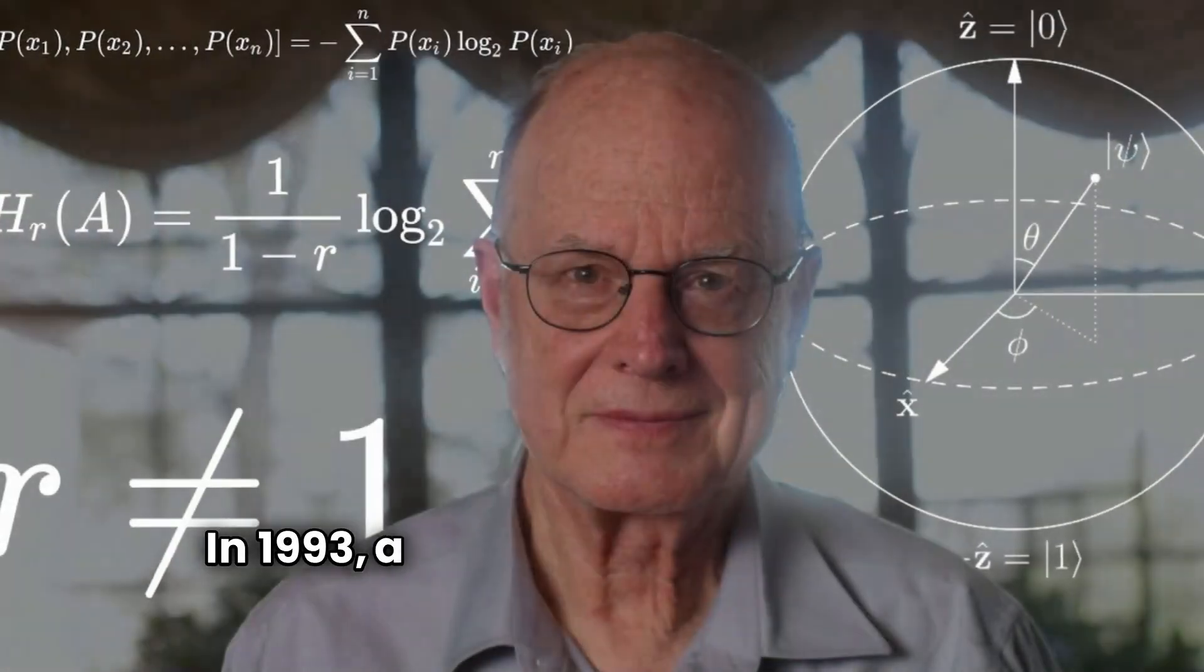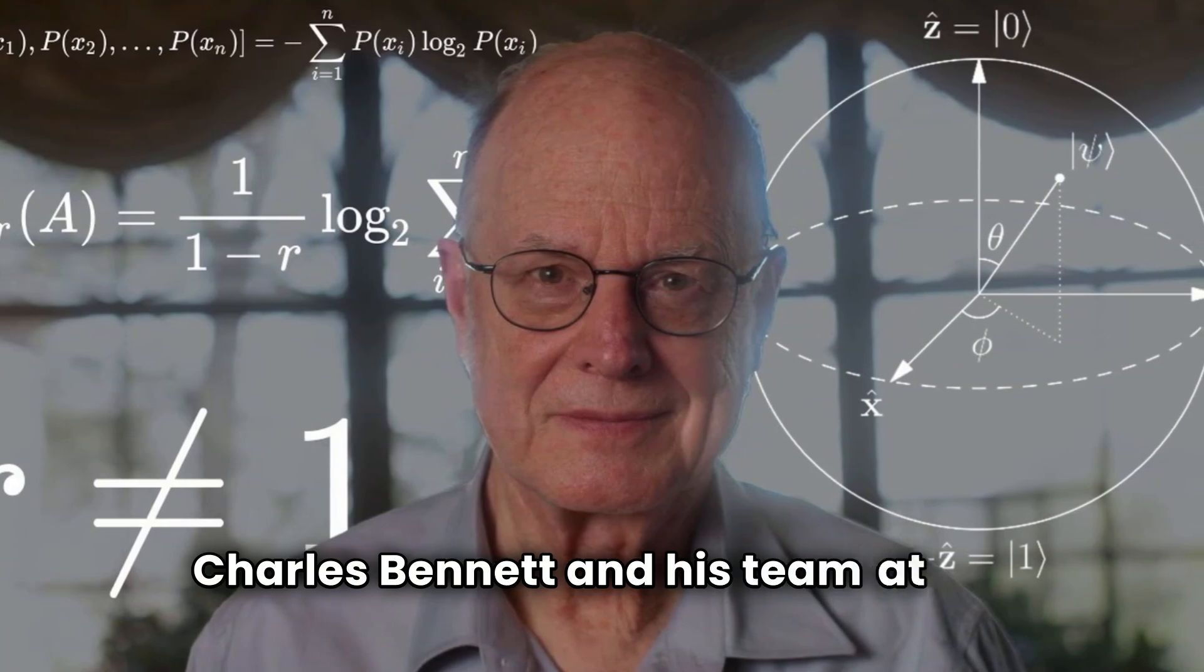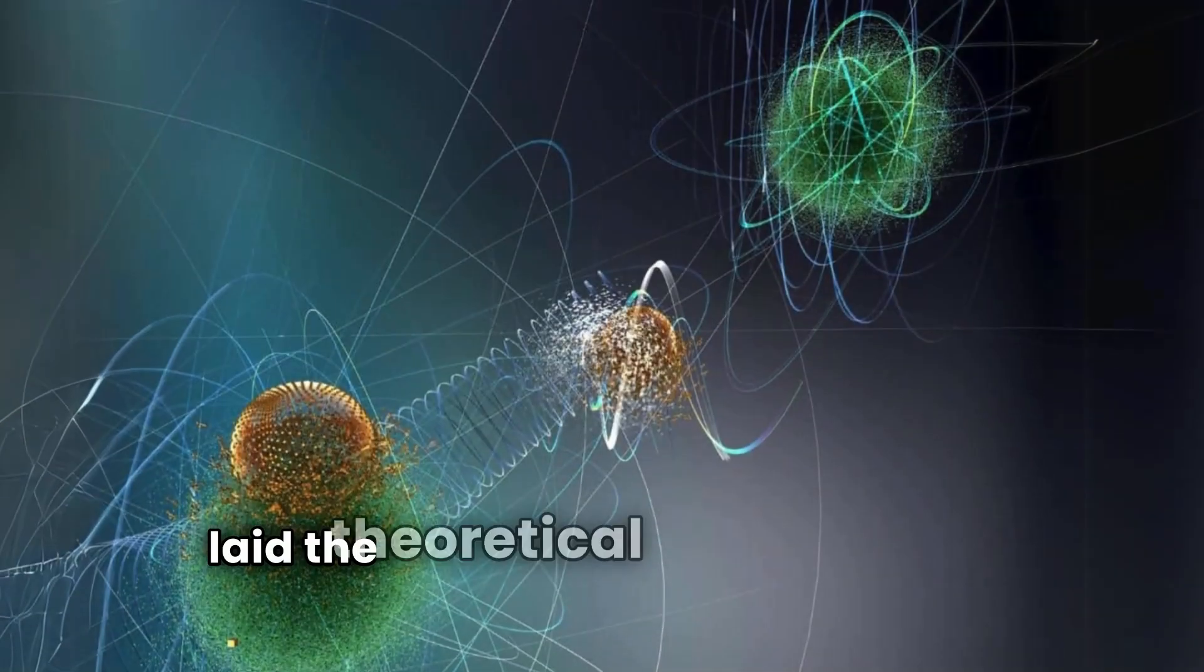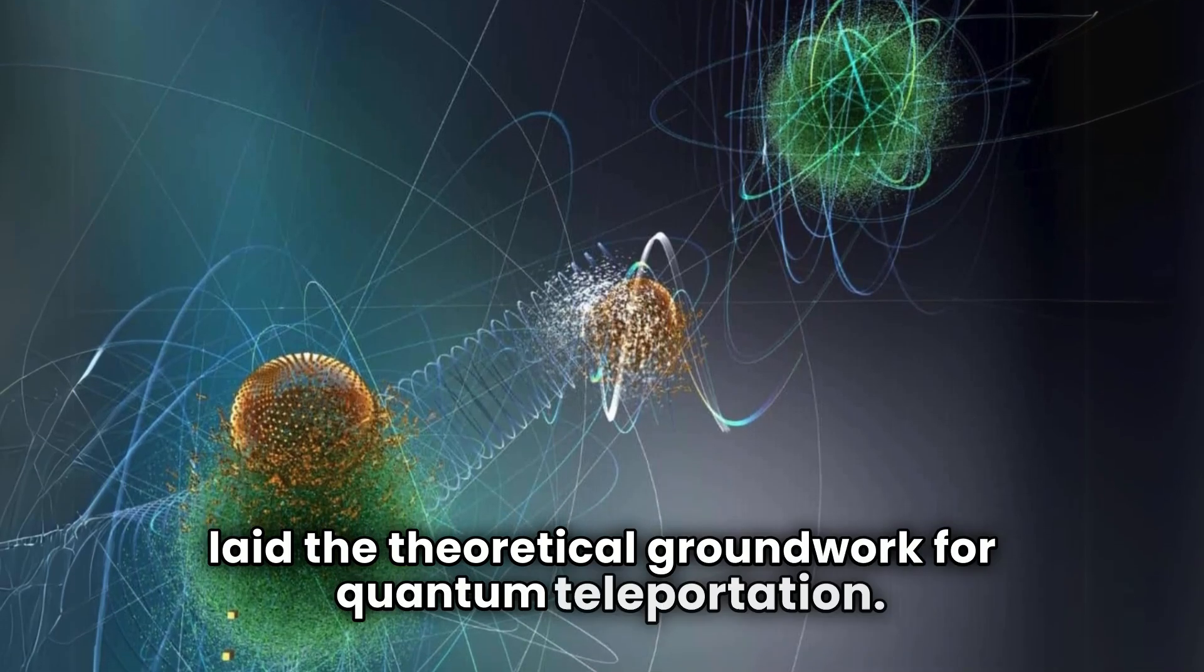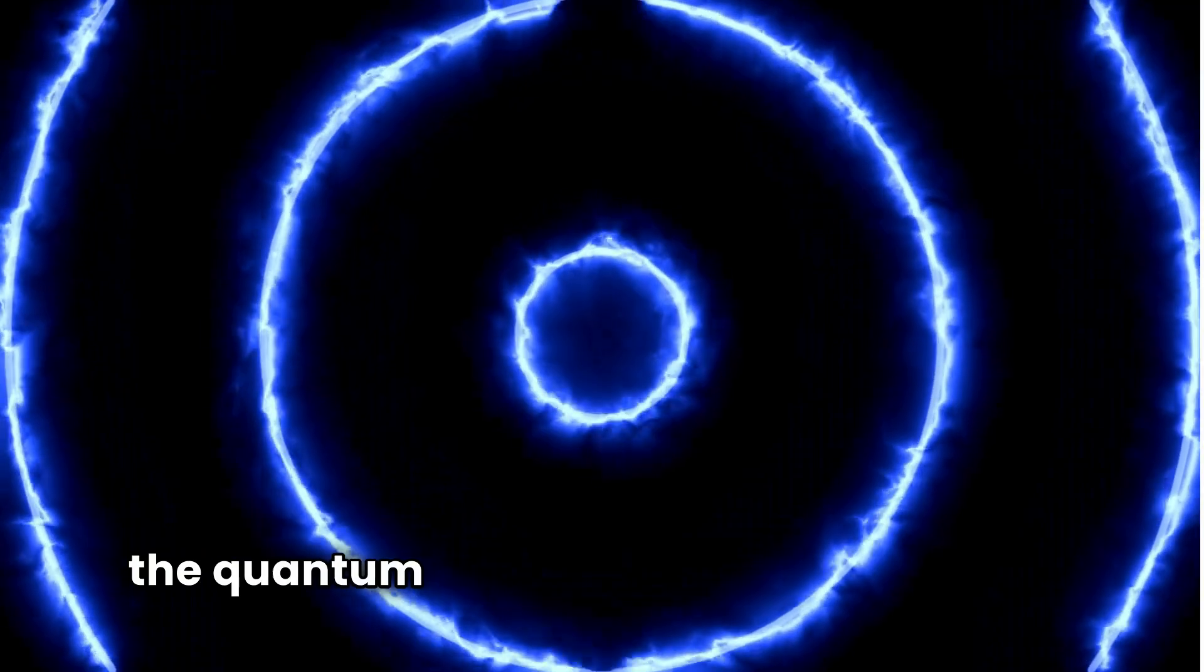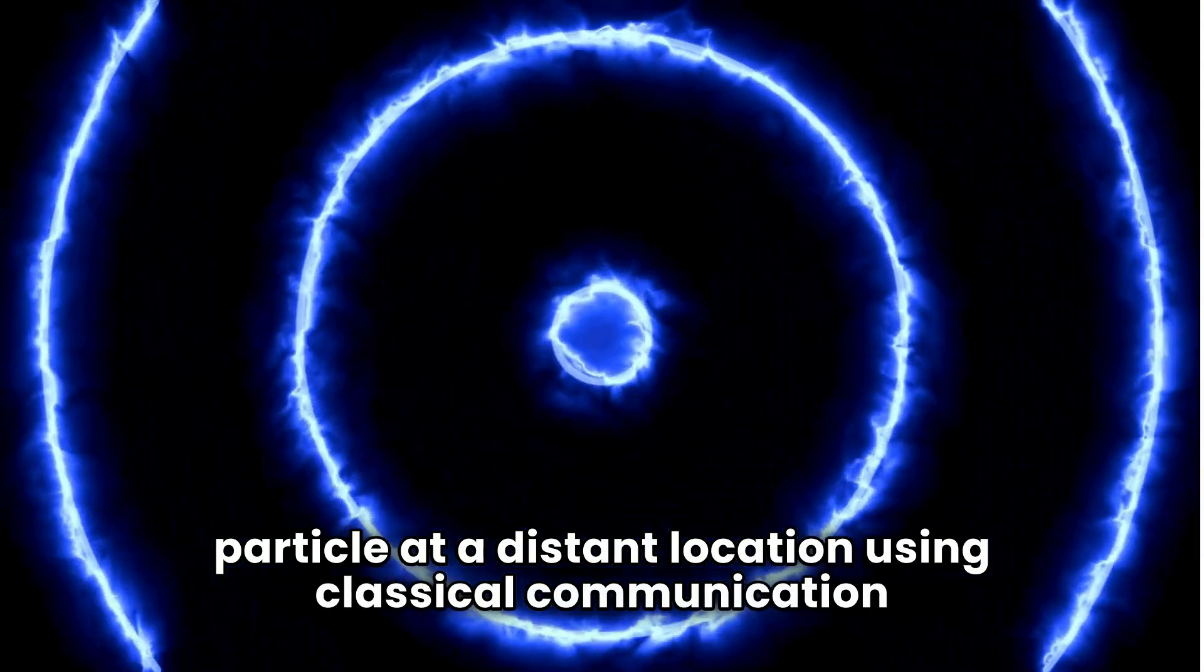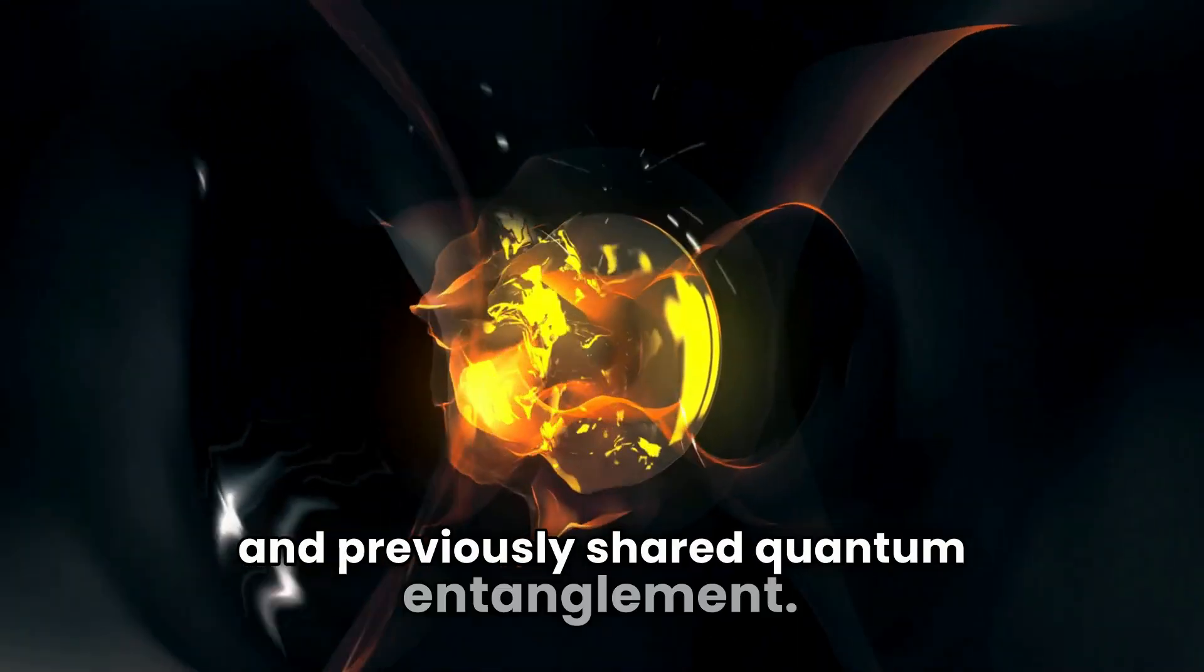In 1993, a groundbreaking paper by physicist Charles Bennett and his team at IBM laid the theoretical groundwork for quantum teleportation. They proposed that it was possible to transmit the quantum state of a particle to another particle at a distant location, using classical communication and previously shared quantum entanglement.